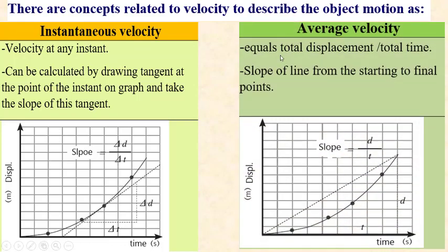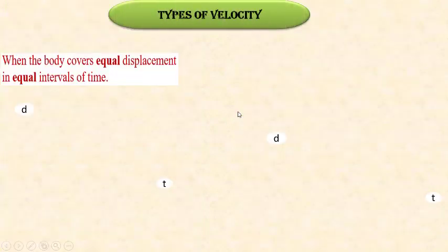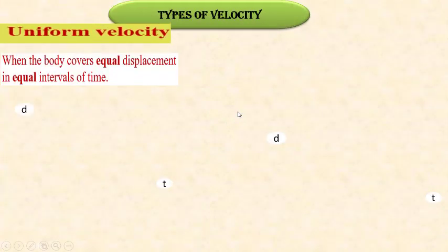The second concept is average velocity. Average velocity is equal to the total displacement covered by the object divided by total time. The slope of the line drawn straight to the final point represents the average velocity, while the tangent at any point represents instantaneous velocity.